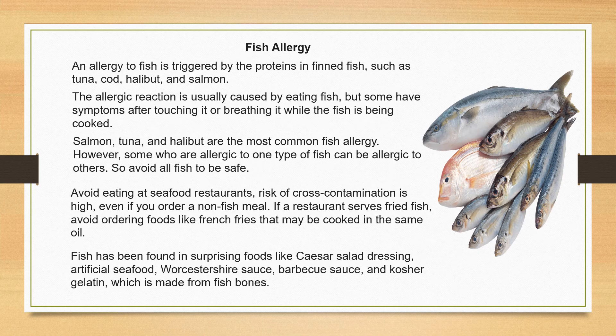Fish allergy: if you have a fish allergy, you're allergic to the proteins in finned fish like tuna, cod, halibut, or salmon. Most people have an allergic reaction after eating fish, but some have a reaction after touching it or breathing it in while the fish is being cooked. If you have a fish allergy, avoid seafood restaurants because of the risk of cross-contamination — for example, fish and fries may be cooked in the same oil. Fish can be found in surprising foods like Caesar salad dressing, artificial seafood, Worcestershire sauce, barbecue sauce, and kosher gelatin, which is made from fish bones.